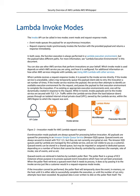Queued events are retrieved in batches by Lambda's Polar Fleet. The Polar Fleet is a group of EC2 instances whose purpose is to process queued event invocations. When the Polar Fleet retrieves a queued event, it passes it to the invoke service just like a customer would in request-response mode. If the invocation cannot be performed, the Polar Fleet will temporarily store the event in memory on the host until it successfully completes execution or until retry attempts are exceeded. No payload data is ever written to disk on the Polar Fleet itself.